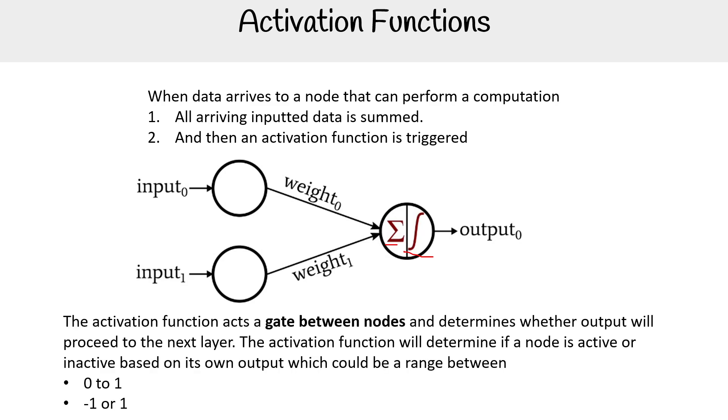The activation function acts as a gate between nodes and determines whether output will proceed to the next layer. The activation function will determine if a node is active or inactive based on its own output, which could be a range between 0 to 1 or -1 to 1.